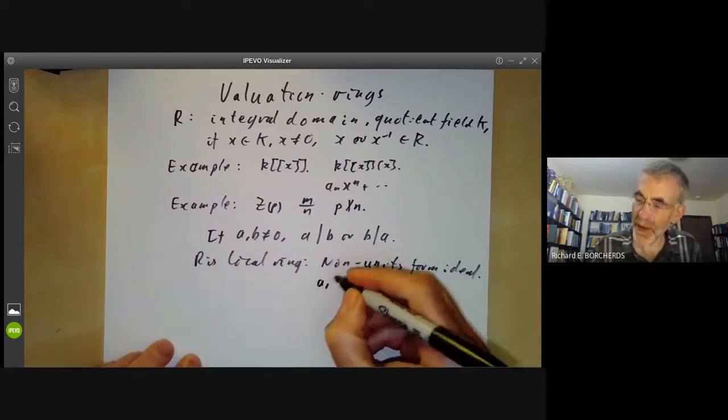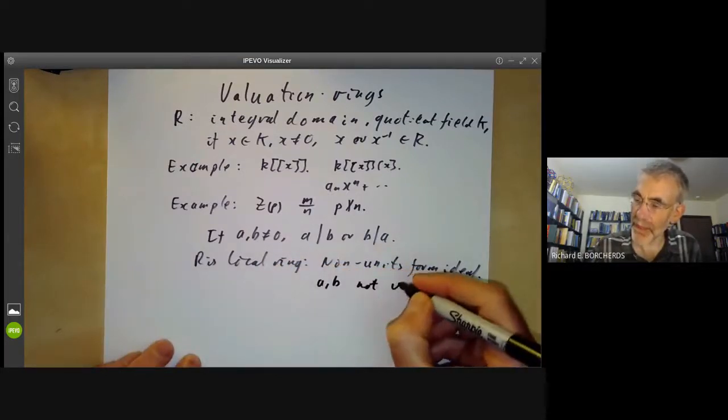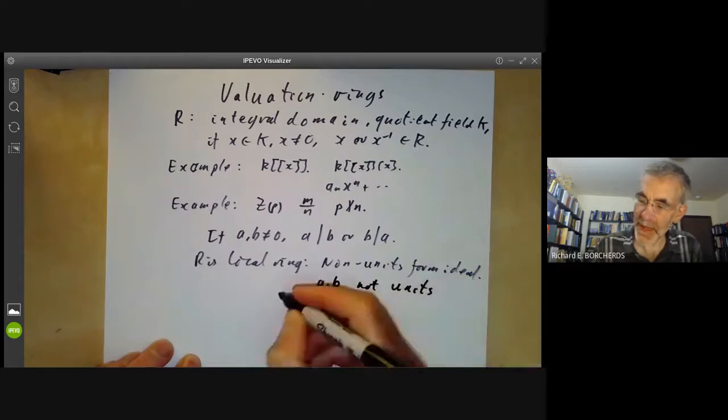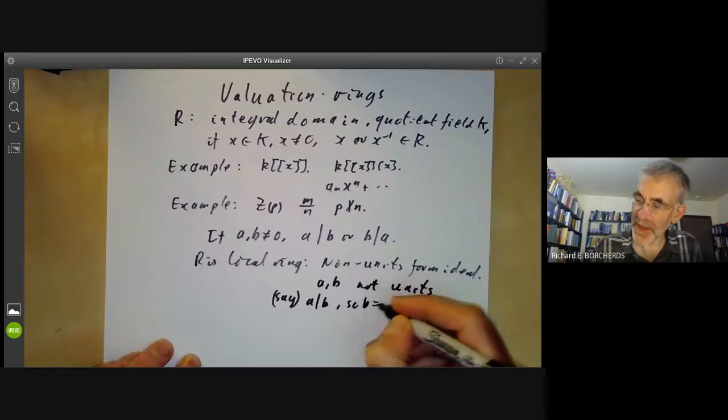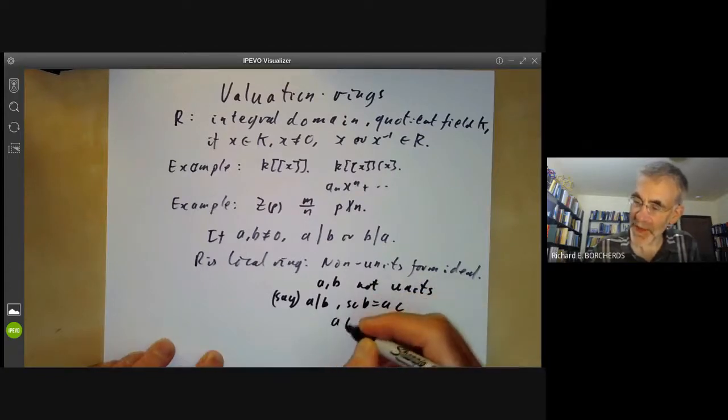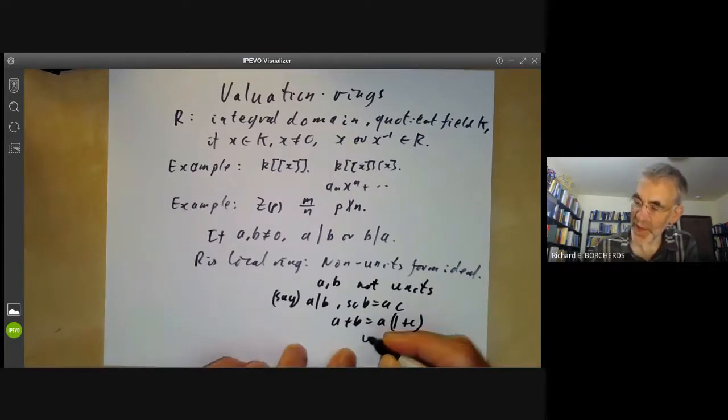But if A and B are not units, then say A divides B, so B equals A times C. And then A plus B equals A times one plus C. So this is also a non-unit.